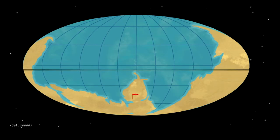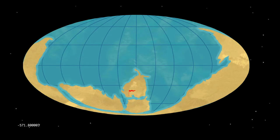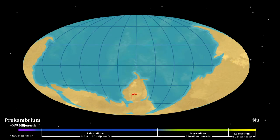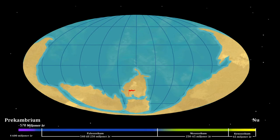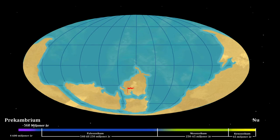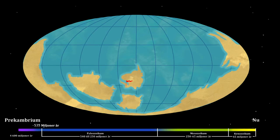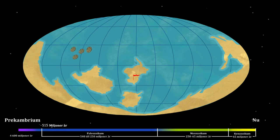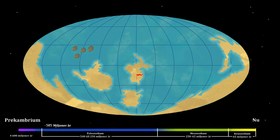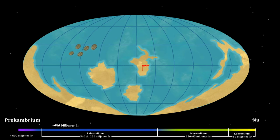Now we'll have a look at the last 570 million years of Earth's history. The map of the world is not like the one we have now, since the continental plates have moved around. The red flag indicates where Gothenburg would have been at that time. 540 million years ago, everything changed at a furious pace. The ancestors of all known animal groups appeared.